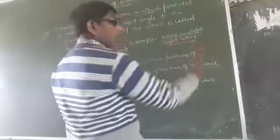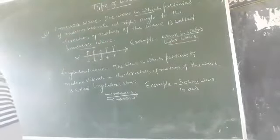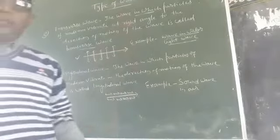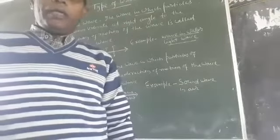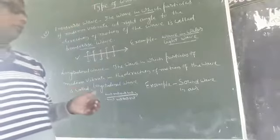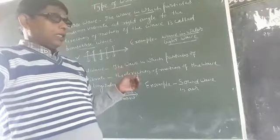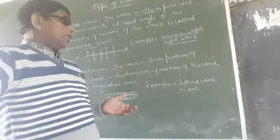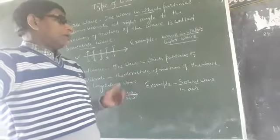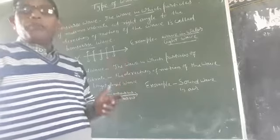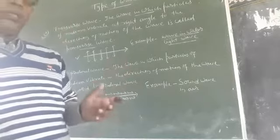A light wave is also an example of a transverse wave. Scientists have observed that photons vibrate at 90 degrees — perpendicularly — to the direction of motion of the wave, though this is beyond the scope of your current class.